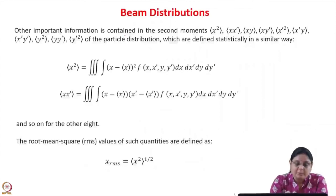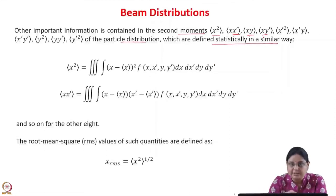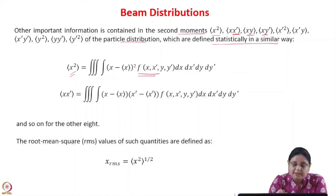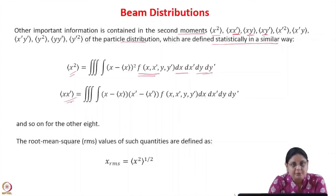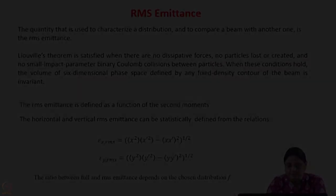The other important information is contained in the second moments, defined as the average of x^2, average of x*x', average of x*y, etc. The second moment is defined statistically — for example, the average of x^2 is the integral of (x minus average x)^2 multiplied by the distribution function f, integrated over dx, dx', dy, dy'. The root mean square values are defined by taking the square root of the second moment, giving x_rms and similar quantities.